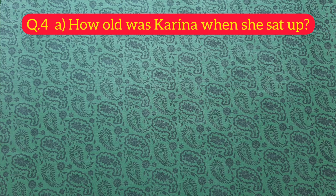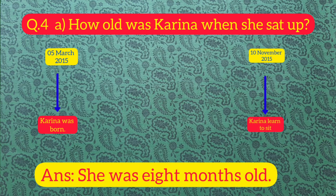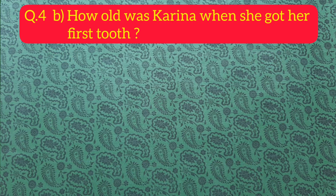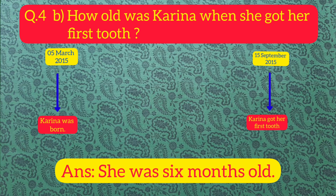Next question number four, part A: how old was Kareena when she sat up? According to the diary, Kareena is born in the month of March and in November she started sitting. So she was 8 months old when she first sat up. Next part B: how old was Kareena when she got her first tooth? As Kareena was born in March and got her first tooth in September, she was 6 months old.